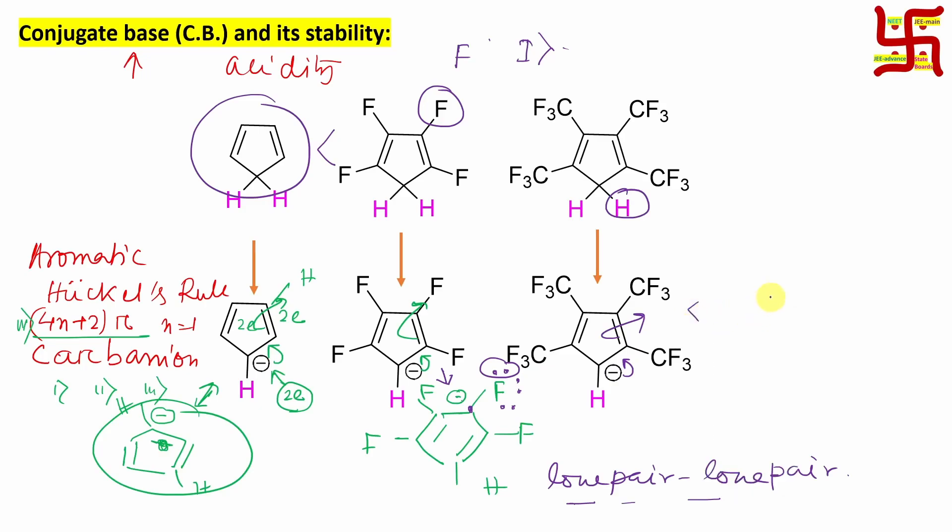If you look at here, so if you remove this proton, the carbanion here. Now if I draw the resonance, so it will push, it will go there, so the canonical form is expected to look like this way: so whatever proton is there, this is, and four CF3. Now negative charge is here, and here CF3 shows minus I only. No repulsion - lone pair-lone pair repulsion exists here.